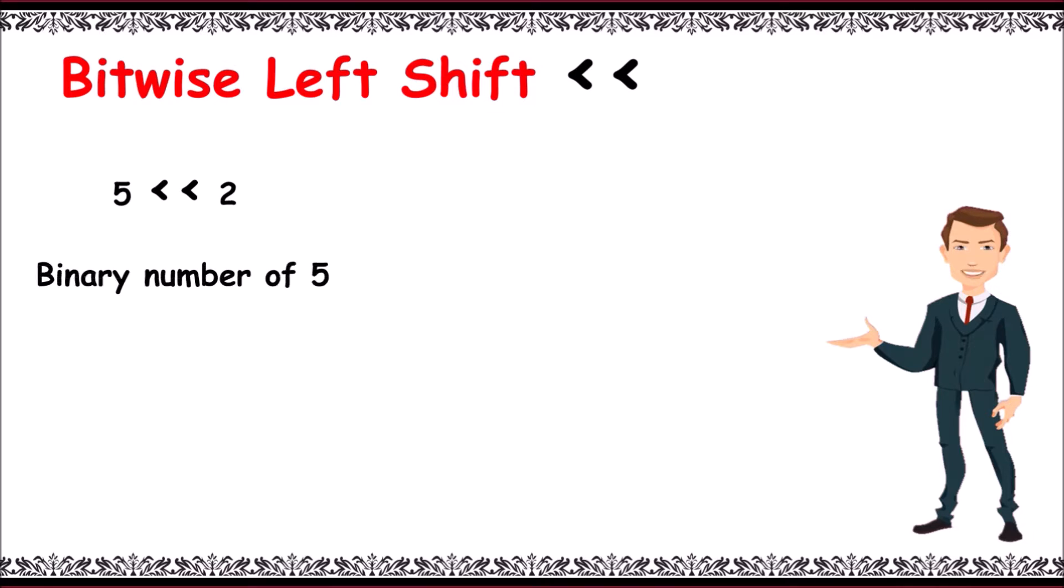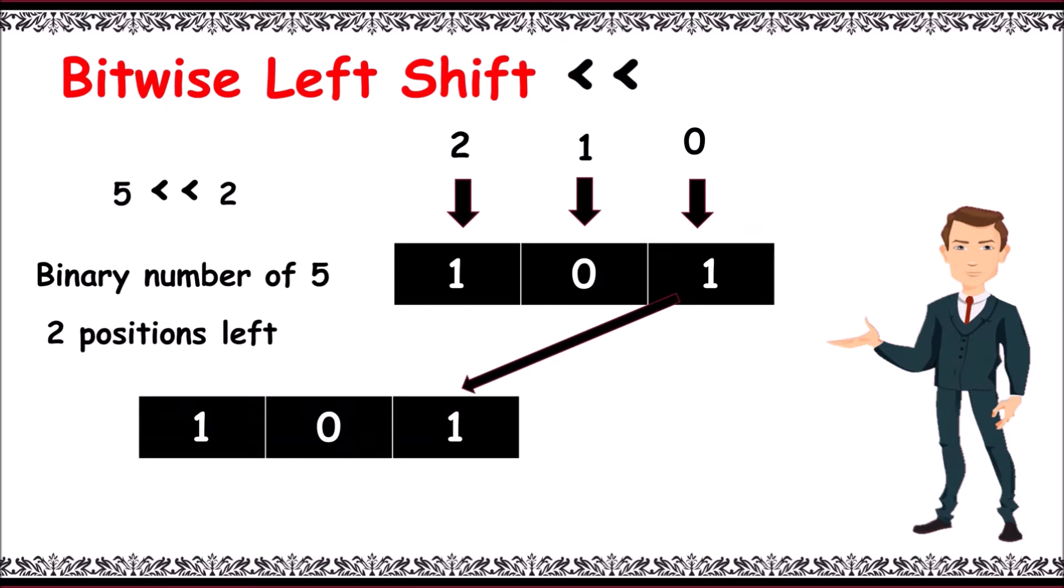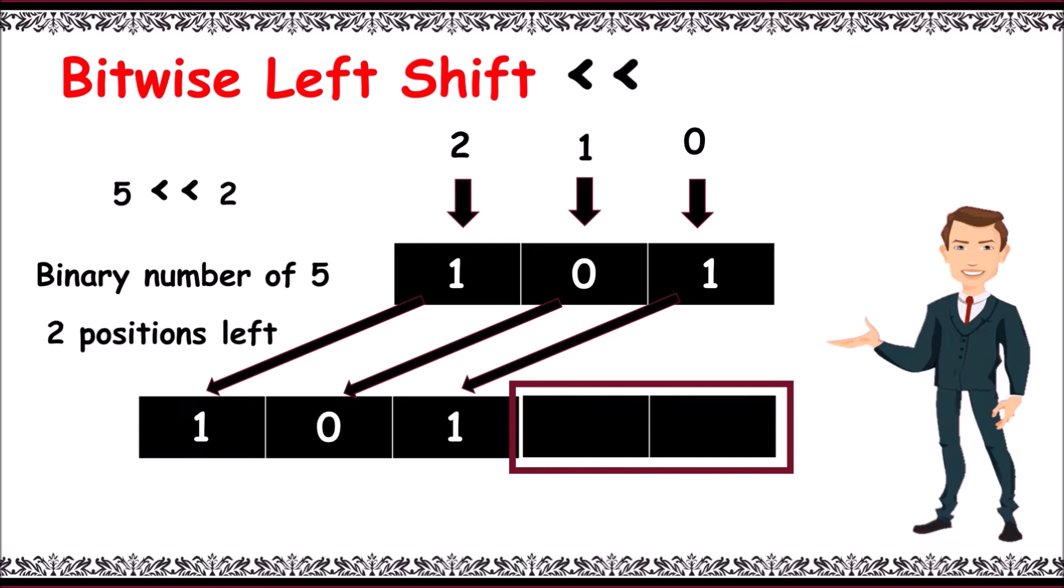Here the positions starting from rightmost are 0, 1, 2. Now as we have given 5 less than less than 2, we need to shift all bit positions towards left for two positions. 1 moved, 0 moved, 1 moved. What about positions 0 and 1? We replace empty positions with 0. So the final result will be 1 0 1 0 0, which is the binary number for 20.